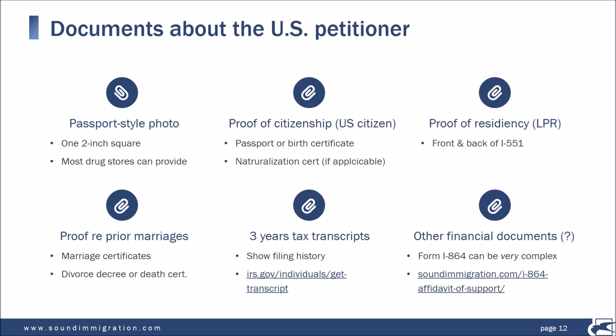Here are the documents that need to be filed by the U.S. citizen or permanent resident petitioner. First, the individual needs one passport-style photograph that's two inches square — you can go to any drugstore to get these. If the petitioner is a U.S. citizen, they need to provide either a passport or birth certificate. If the individual was a naturalized citizen, provide a copy of your naturalization certificate. If born abroad, provide a copy of the CRIBA — the Consular Report of Birth Abroad. For most people it's going to be the passport or U.S. birth certificate.